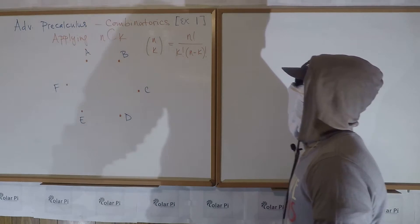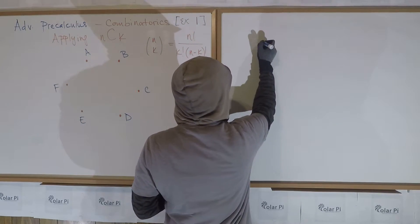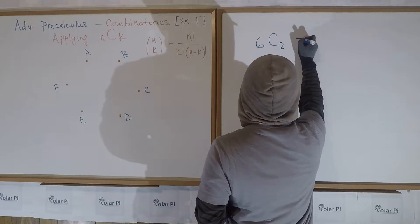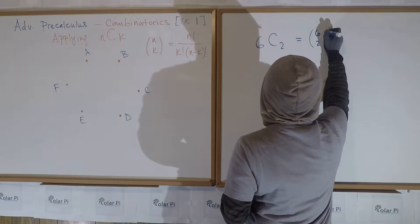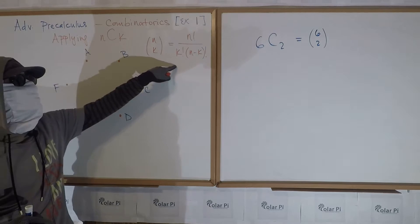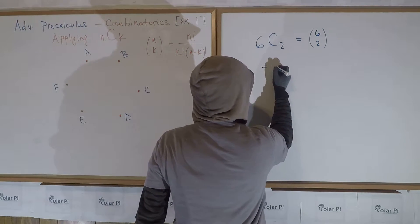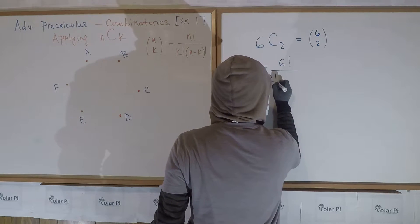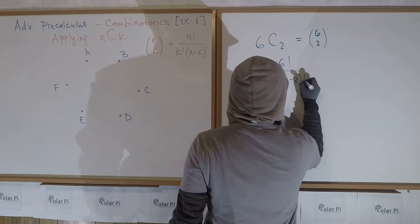Let's figure out what six choose two is in this case. Six choose two is what we're interested in and we could denote it like this. So the formula for n choose k is right here. Plugging in the formula, we see that six choose two is six factorial over two factorial times six minus two factorial.